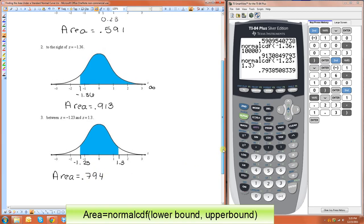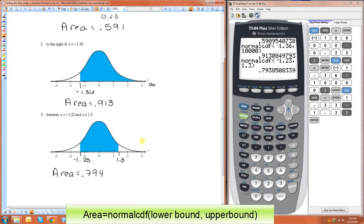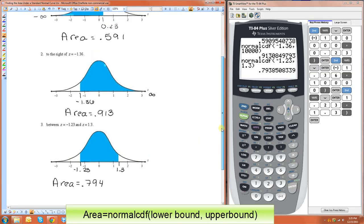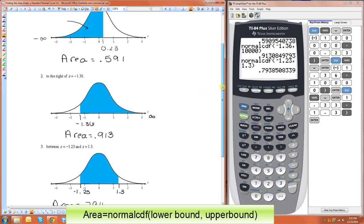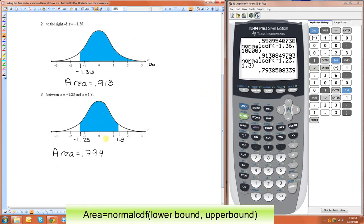Now one thing to remember is that the entire area is supposed to be 1. So I suggest kind of looking at the graph that you have and seeing if the number you have kind of makes sense. Yeah, this looks like it's about 91.3 percent of the total. This looks like it's a little more than half, about 60 percent. That looks about 80 percent. So these numbers make sense.